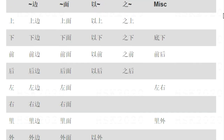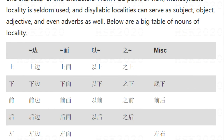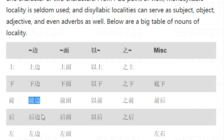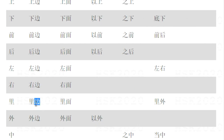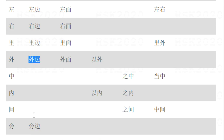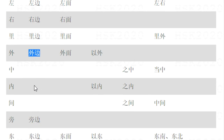So what do these mean? 上 means above. If we add 边 (meaning side), we get 上边, meaning above side. 下边. 前, 前边, front side. 后, 后边, back side. 左, 左边, the left or left side. 右, 右边. Then 里 means inside. 外, 外边, outside. 中 — we don't add 边.